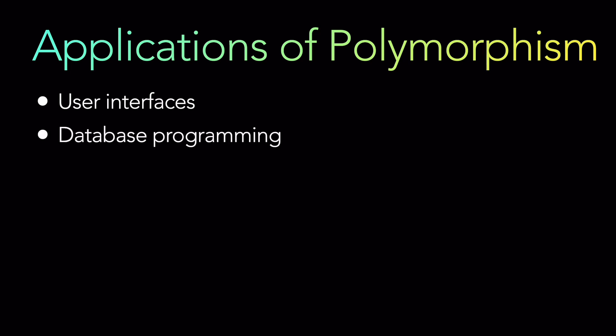Next is database programming. Polymorphism is heavily used in database programming to abstract away the underlying database system and provide a unified interface to work with data. This allows applications to be written in a database-agnostic way. The code you write is agnostic to which kind of database is being used, which means if you need to migrate — say from a SQL database to a NoSQL database — those underlying database system details can be completely abstracted and hidden.